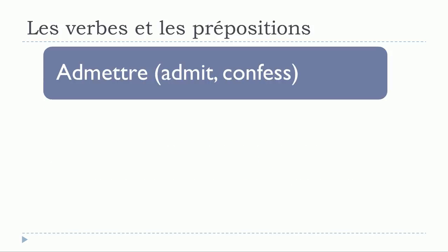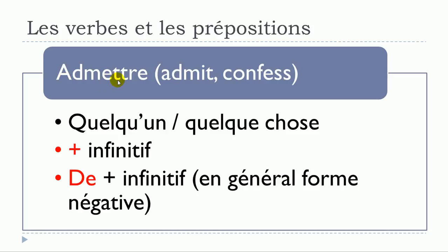Verb number three is admettre. Admettre quelqu'un, admettre quelque chose, then admettre plus verbe à l'infinitif, or admettre de plus infinitif — which is generally used in the negative form. So if you want to use this structure, in most cases you will use admettre at the negative form.